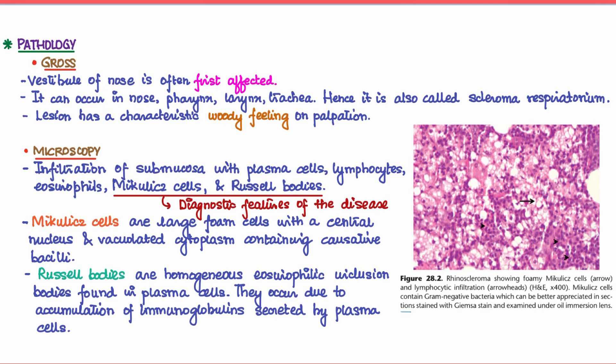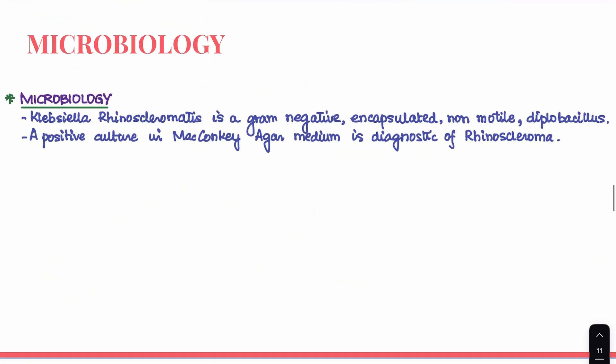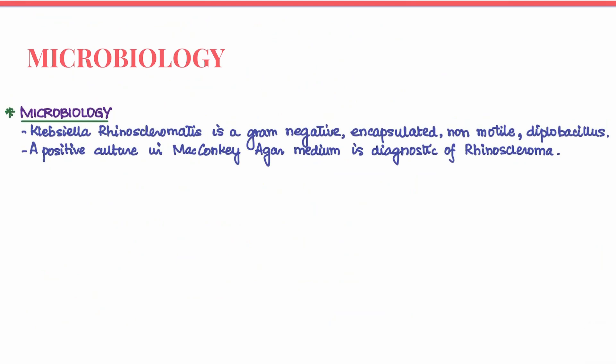This histological picture is very important even in practical exams — you may be shown a slide and asked to identify the disease. Remember the appearance of Mikulicz cells and Russell bodies to clinch the diagnosis. Microbiologically, the causative bacillus is gram-negative, encapsulated, non-motile, and a diplobacillus. A positive culture on MacConkey agar medium is very diagnostic of rhinoscleroma.